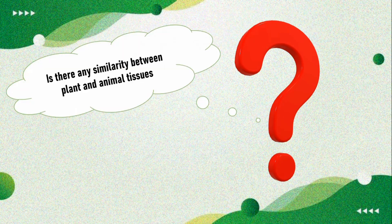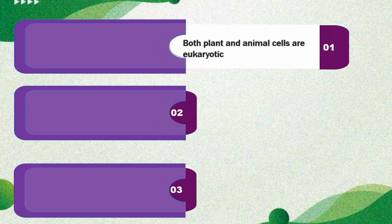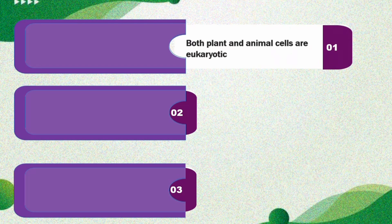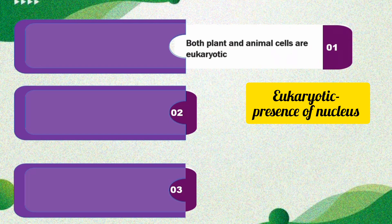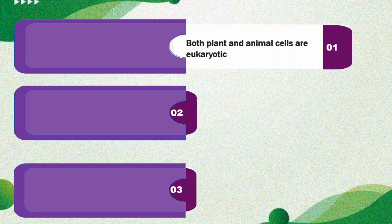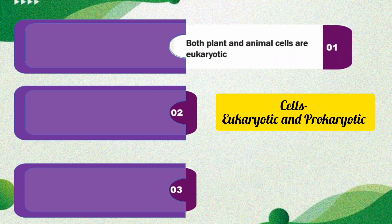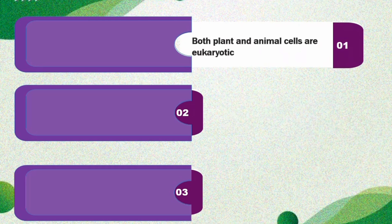Is there any similarity between plant and animal tissues? Yes, there is. The first similarity is that both plant and animal cells are eukaryotic. Eukaryotes are those which have a nucleus. Basically, cells are divided into two types: eukaryotic cells and prokaryotic cells. Eukaryotes are those which have a true nucleus.